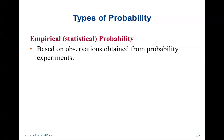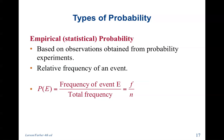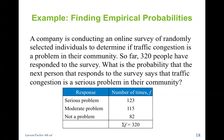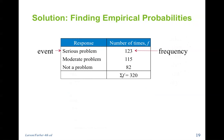Empirical or statistical probability. Based on observations obtained from probability experiments. Relative frequency of an event. This relates back to chapter two. So the probability is frequency of an event divided by the total frequency, F over N. A company is conducting an online survey of randomly selected individuals to determine if traffic congestion is a problem in their community. So far, 320 people have responded to the survey. What is the probability that the next person that responds to the survey says that the traffic congestion is a serious problem? Serious problem, there's 123 people. Moderate problem, 115. Not a problem at all, 82. So the event serious problem has a frequency of 123. You would take the frequency of 123 divided by the total 320 and get our probability at .384.